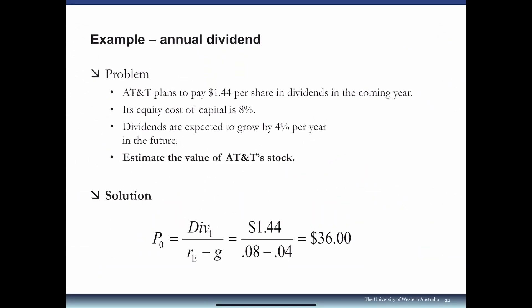AT&T plans to pay $1.44 per share in dividends in the coming year. Its equity cost of capital RE is 8%, and dividends are expected to grow by 4% per year starting from year 1. Here, $1.44 is D1 — what you expect to receive at the end of the year. Using P0 = D1 / (RE − G) = 1.44 / (0.08 − 0.04), the estimated value of AT&T stock is $36.